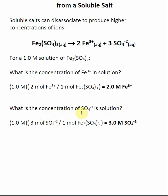I can do the same thing for sulfate. In this case it is a three-to-one ratio — for every one iron(III) sulfate I use up, I make three sulfates. I take the initial concentration of my iron(III) sulfate and multiply by the mole ratio: three moles of sulfate per one mole of iron(III) sulfate. So after dissociation, I end up with a concentration of sulfate of 3.0 molar.